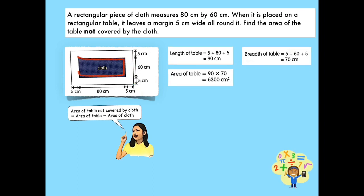Next, we are going to find the area of the rectangular cloth. To get the area of the cloth, we multiply its length and breadth. The length of the given cloth is 80 cm and its breadth is 60 cm, as shown in the given figure. So, 80 times 60 is equal to 4,800 square centimeters. The area of the rectangular piece of cloth is 4,800 square centimeters.